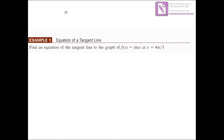Example 1: Find an equation of the tangent line to the graph of f(x) = sin(x) at x = 4π/3. We need to find the slope and the point. First, differentiate sin(x) to get the slope, then substitute x = 4π/3, and finally use the slope and point to write the equation.